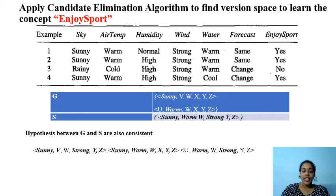So any value is possible. That is given by this variable Z. So by traversing this training instances, we got these three hypotheses. And these two are generalized concepts and this one is specialized concept.